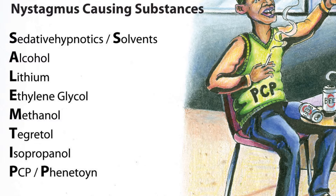So remember, thiamine deficiency can cause nystagmus and ophthalmoplegia. I is for isopropanol. P is for PCP or phenytoin.